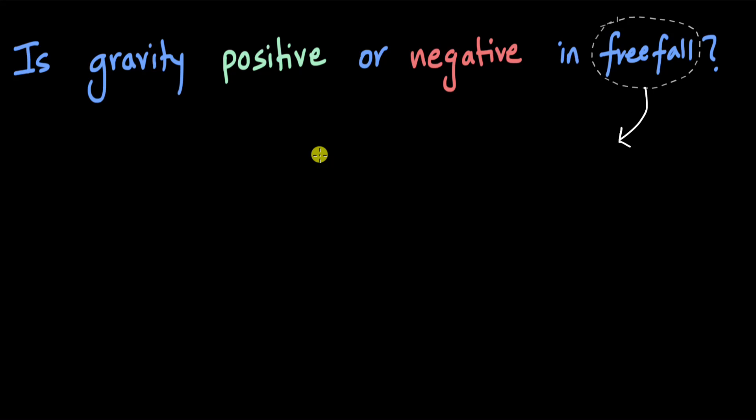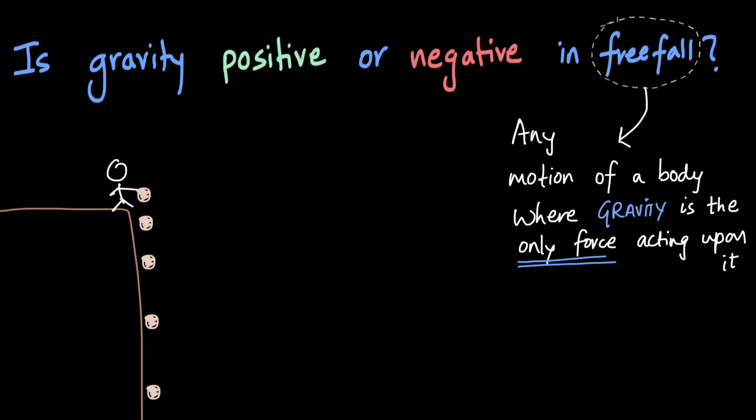Free fall is any motion of a body where gravity is the only force acting upon it. This includes cases like when someone drops a ball from a height and the ball starts falling down — the only force acting on the ball is the force of gravity, which causes an acceleration called acceleration due to gravity.